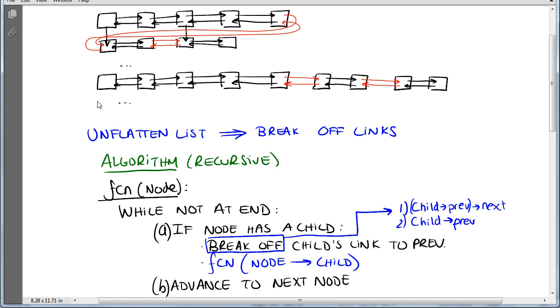To do that, we need to reverse the operation by breaking off the links we created. Those red links you see here were created to link all elements on the first level, allowing us to follow the next pointers and traverse all elements in the multi-level data structure. Now we're going to break off those links.